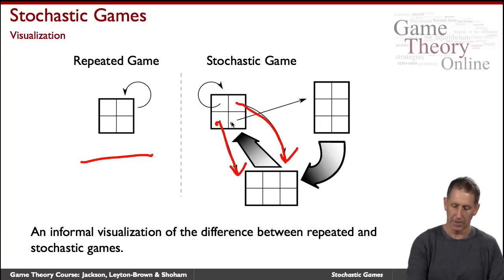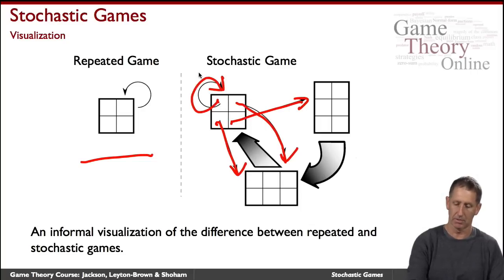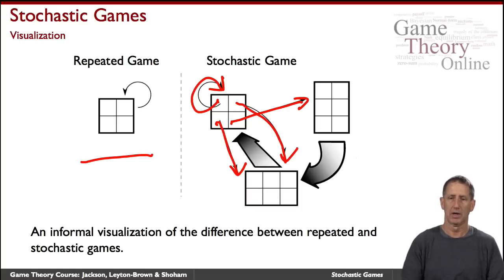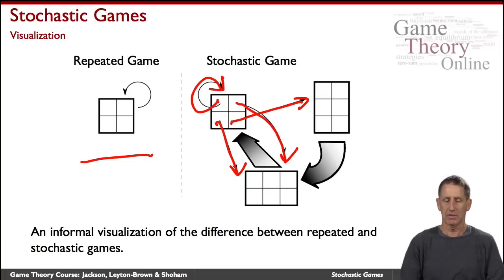If you play this action, you'll transition to another game. If you play this, maybe you'll play this game again. And so on — from each game you transition probabilistically to other games. This is a stochastic game.